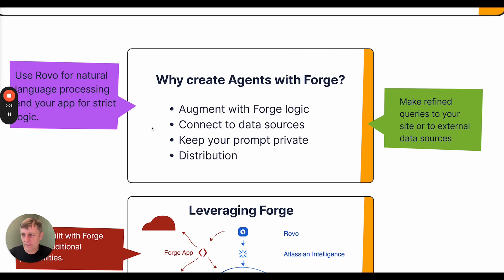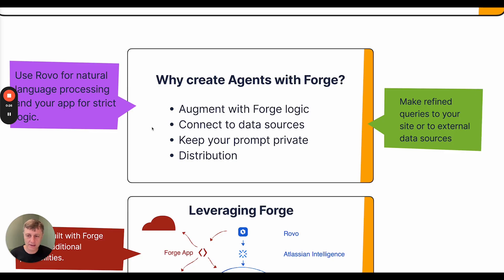So now we're going to create an agent with Forge. But first, why would you want to when you can create agents directly in Jira and Confluence? There are a few reasons: the ability to augment the agent with logic in the Forge app, connect to bespoke data sources, keep the prompt of your agent private, and distribute your agent in the Atlassian marketplace.